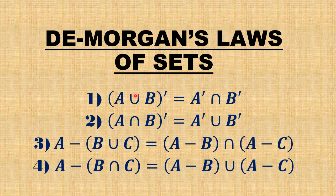The first law is: (A union B) complement = A complement intersection B complement. The second law is: (A intersection B) complement = A complement union B complement. The third law is: A minus (B union C) = (A minus B) intersection (A minus C). The fourth De Morgan's law is: A minus (B intersection C) = (A minus B) union (A minus C). When minus applies, union changes to intersection and intersection changes to union.